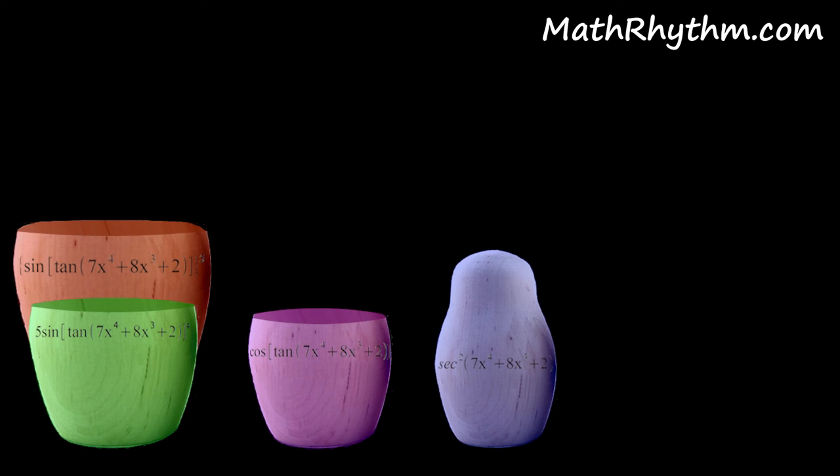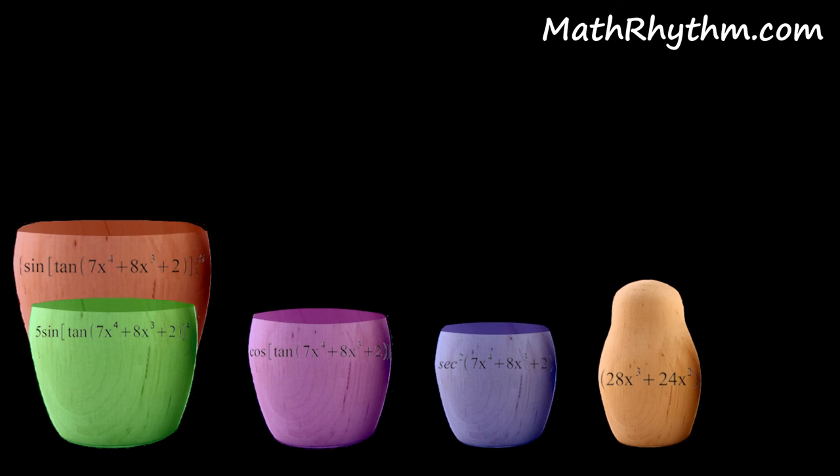Now finally, you're ready to take the derivative of the far inside function. So, bringing that 4 down in front, we get a 28x cubed. Bringing that 3 down, we get a 24x squared. And the derivative of a constant is always zero, so our final piece is 28x cubed plus 24x squared.